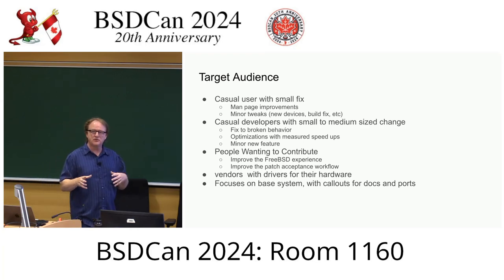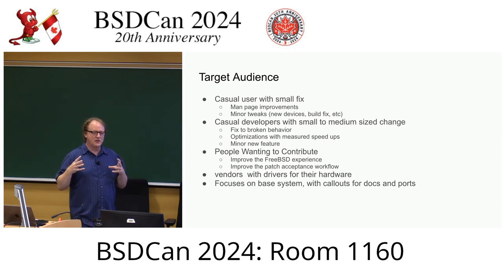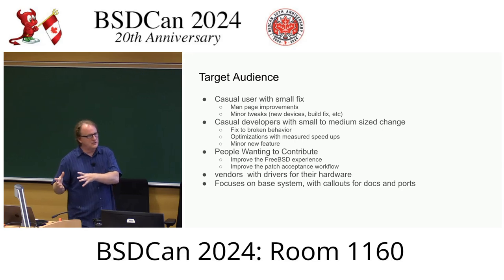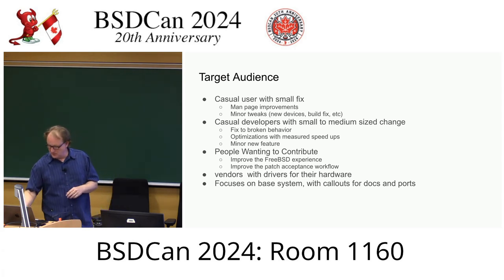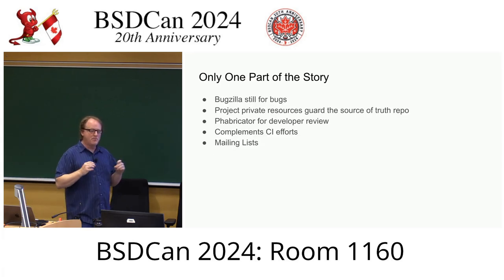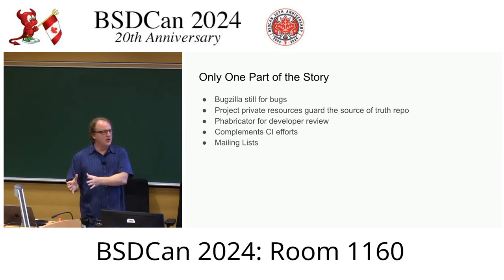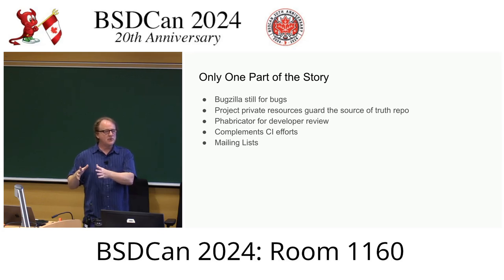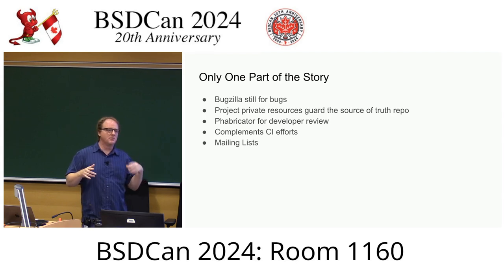This talk and experiment focus on the base system — the files in the source repository. Ports and docs are doing their own experimentation with GitHub pull requests with different evaluation criteria. Pull requests are only one part of the bigger FreeBSD story. We're still going to use Bugzilla for bugs; we're not going to use GitHub issues. Bugzilla is still the place to document bad behavior, although we'd like to deemphasize it as a place to submit patches for the base system, because pull requests work better — it's easier to rebase and update than a patch sitting in Bugzilla.